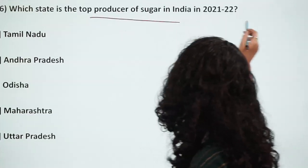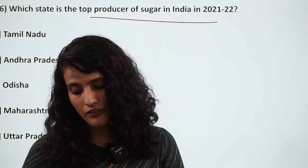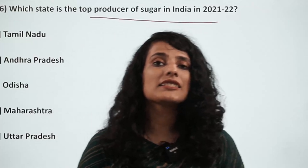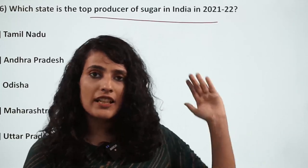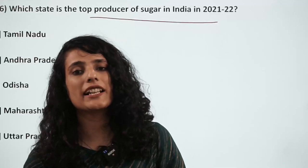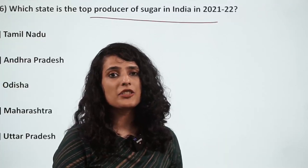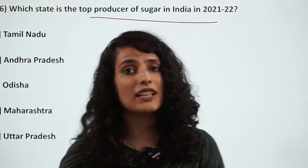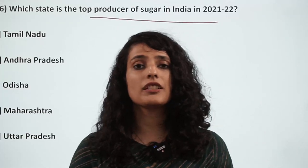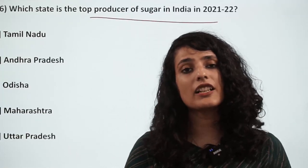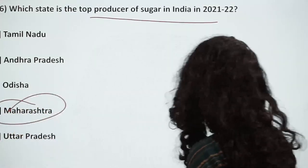Which state is the top producer of sugar? Sugar cane is one of the most important and water-guzzling crops. India is the second largest producer of sugar cane in the world after Brazil. The key difference is that Maharashtra mein jo sugar cane produce hota hai uska sucrose content zaada hota hai, making it more in demand. Maharashtra has now overtaken Uttar Pradesh to become the largest producer of sugar cane in the country.